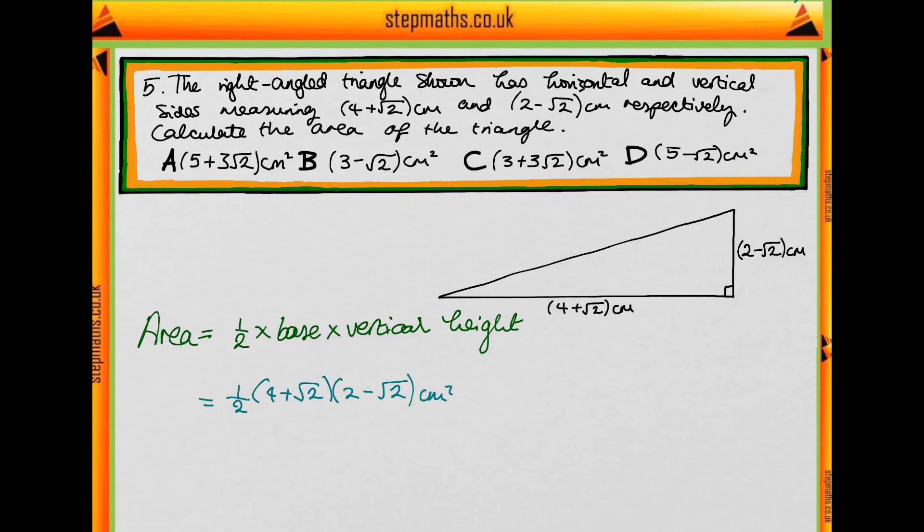We need to write half times the base which is 4 plus root 2 and the vertical height which is 2 minus root 2. Have a go now at expanding these brackets out and see if you can reach the right answer.